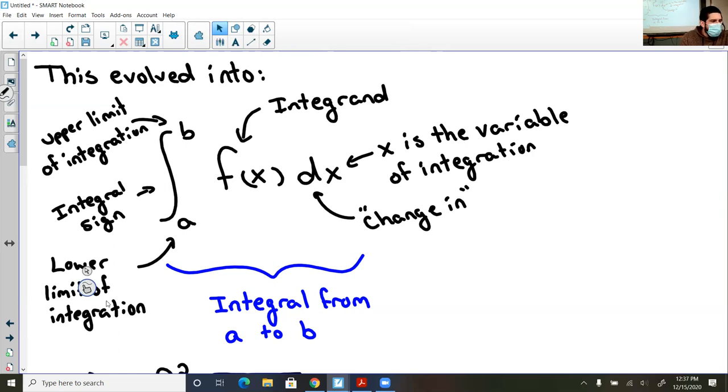Now to just go ahead and to read what I put in here, a is always the lower limit of integration. So if I were to go from, let's say, zero to four, zero would go where the a value is. b is the upper limit of integration. So that would be the higher value. And then this elongated s is not actually an s, it is the integral sign.